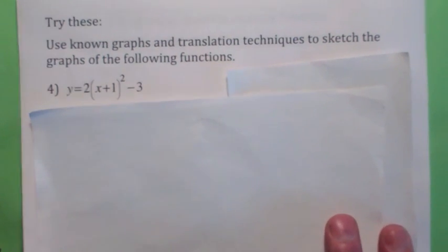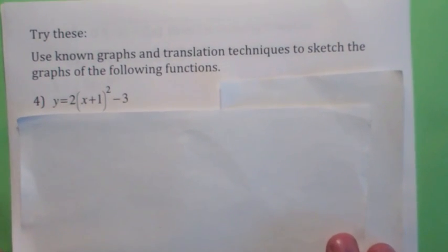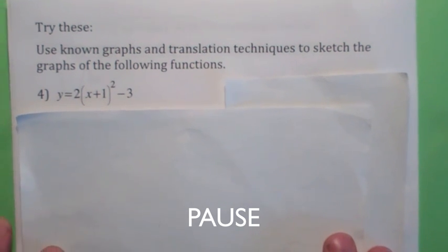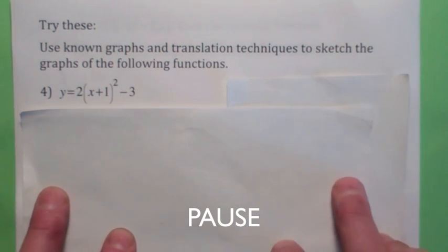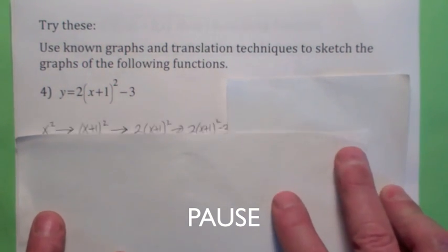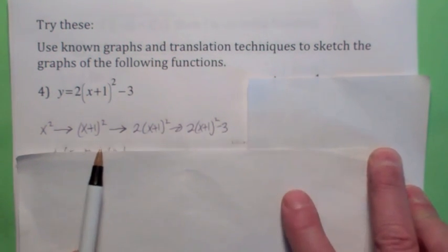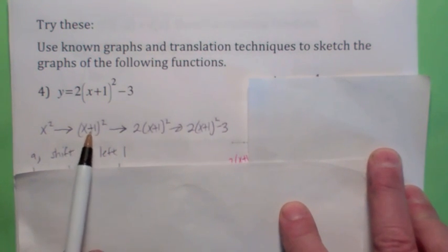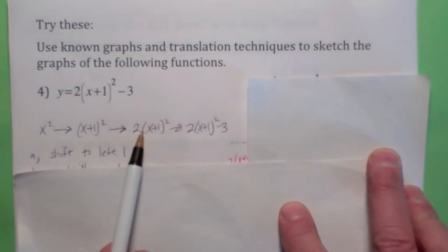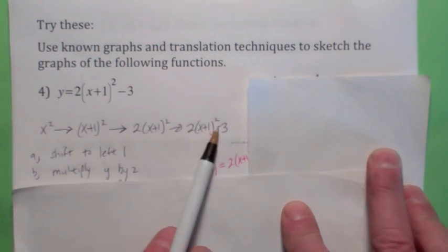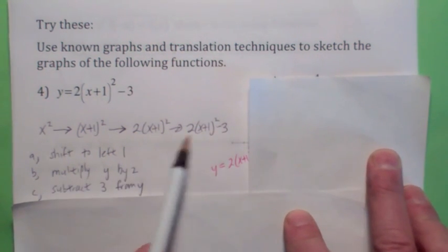Sketch the graph of these, and also see if you can draw a sequence of transformations. In terms of the sequence, you can take x squared, replace x with x plus 1 — that shifts it 1 to the left. Then you multiply the y-coordinate by 2 — that's a vertical stretch by a factor of 2. And the last thing is you subtract 3 from y — that moves it down 3.